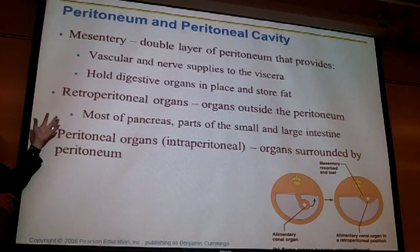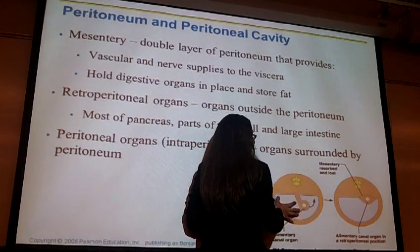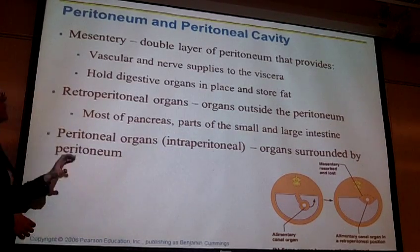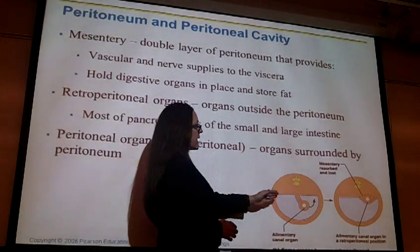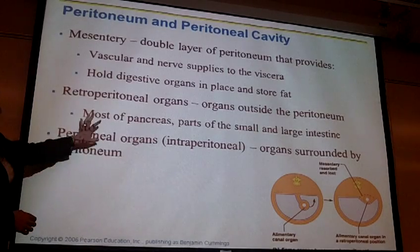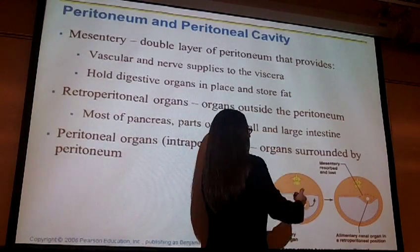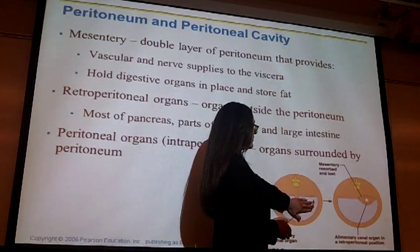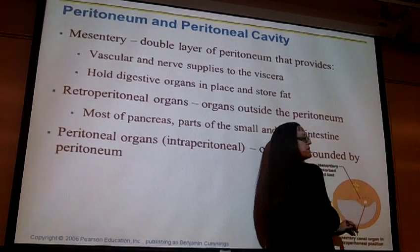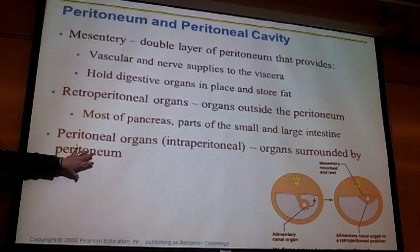Some digestive organs are inside the ventral abdominal cavity — referred to as intraperitoneal organs. Some organs sit slightly dorsal, slightly behind that peritoneum — those are called retroperitoneal organs. For example, most of the pancreas and parts of the small and large intestine can be intraperitoneal or retroperitoneal depending on their position. So: retro means slightly outside, intra means inside that peritoneum.